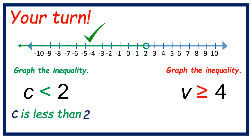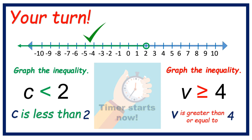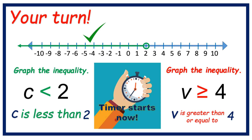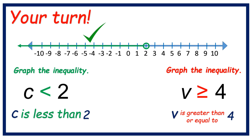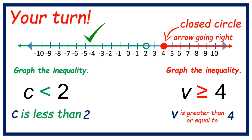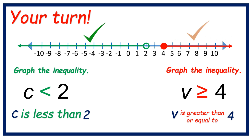Let's graph the inequality: V is greater than or equal to 4. Timer starts now. Let's check your answer. First, let us look for positive 4. Then draw a closed circle and decide whether it is left or right. Since our symbol is pointing to the right, we are going to use an arrow going right. That's it, you got it.